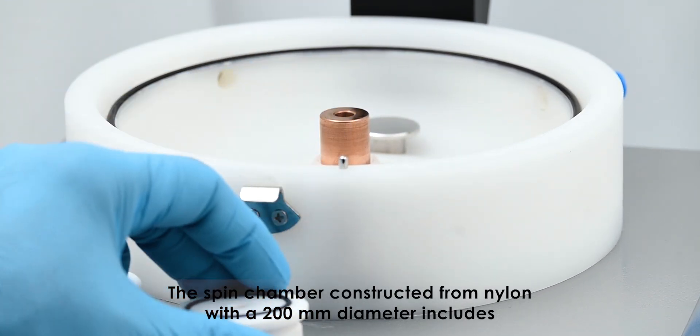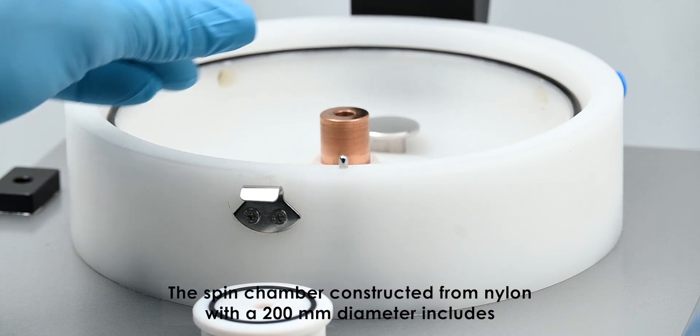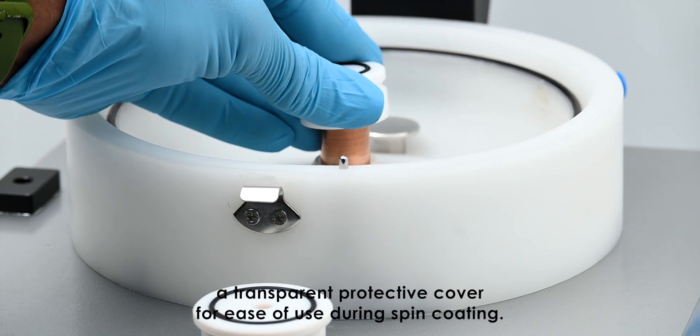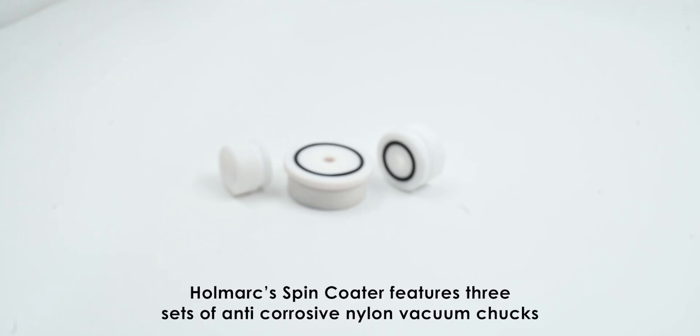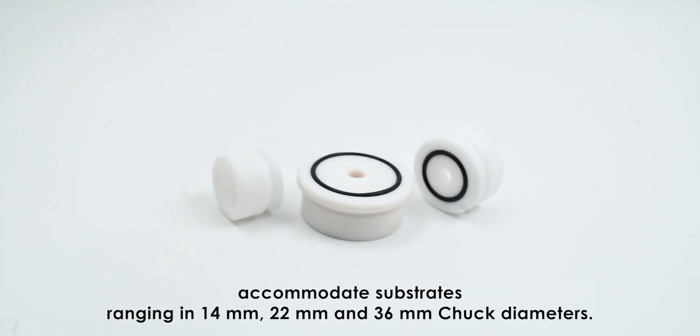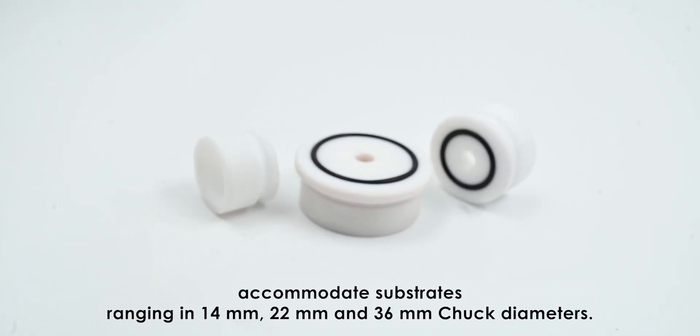The spin chamber, constructed from nylon with a 200 millimeter diameter, includes a transparent protective cover for ease of use during spin coating. Hallmark spin coater features three sets of anti-corrosive nylon vacuum chucks to accommodate substrates ranging in 14 millimeters, 22 millimeters, and 36 millimeters.